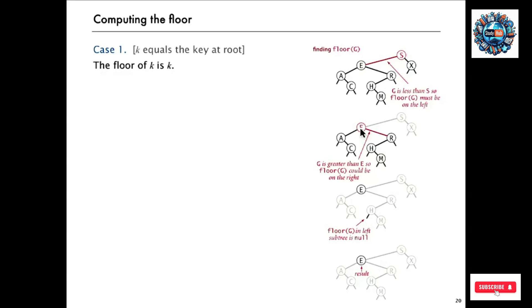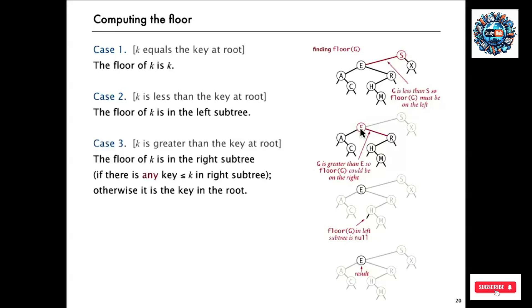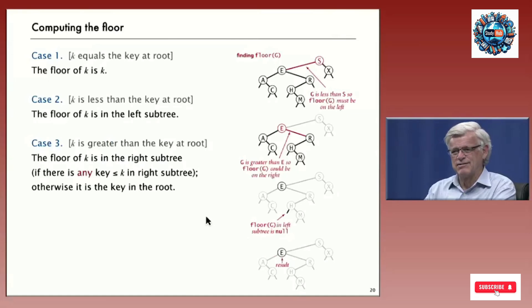So we move to the right in this case. To summarize the three cases: if K is equal to the key at the root, the floor of K is K. If K is less than the key at the root, it's in the left subtree. If it's greater than the key at the root, the floor of K is in the right subtree — if there is any key smaller than K in the right subtree. In this case, there's no key smaller than G in the right subtree, so therefore the answer is E. Our code has to check for these three cases.